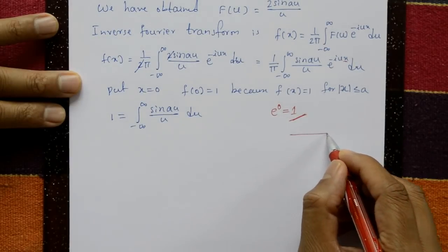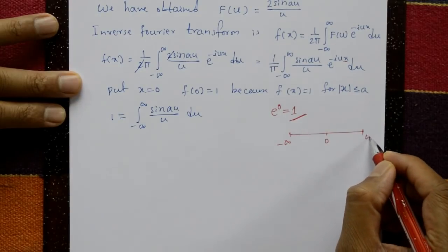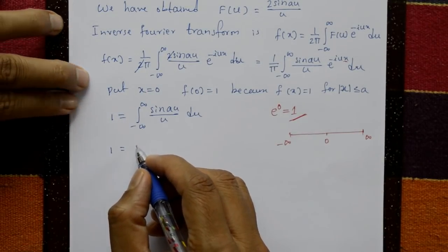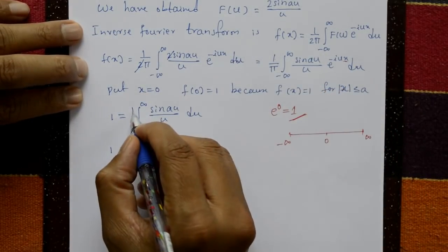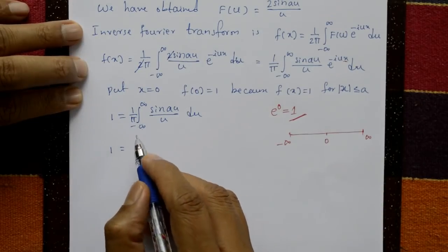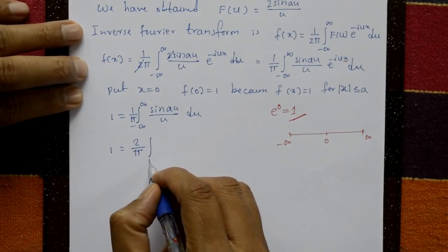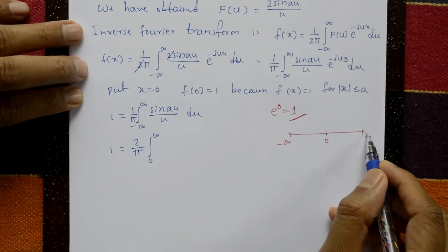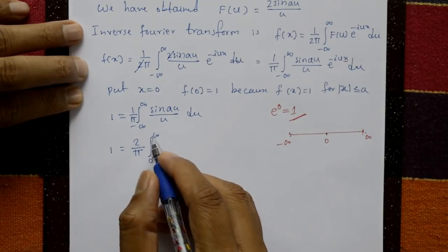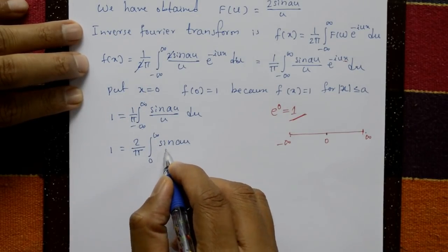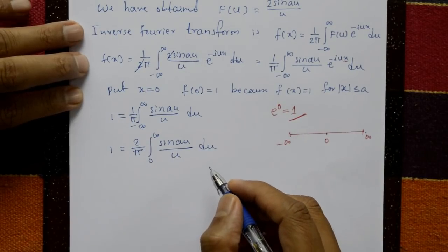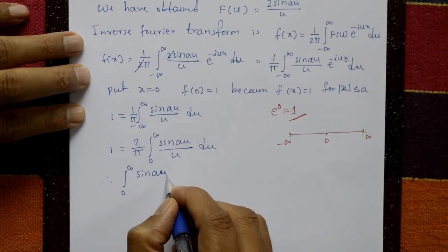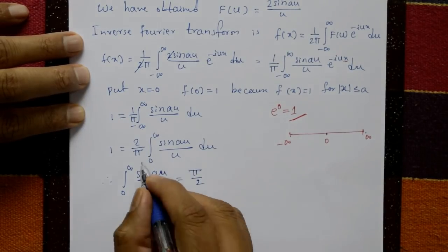The integral from minus infinity to plus infinity can be split: the integrand sin(a·u)/u is an even function, so the integral from minus infinity to plus infinity equals 2 times the integral from 0 to infinity. Therefore 1 equals 1/π times 2 times the integration from 0 to infinity of sin(a·u)/u with respect to u. Cross-multiplying gives the integral from 0 to infinity of sin(a·u)/u equals π/2.